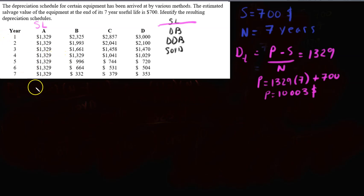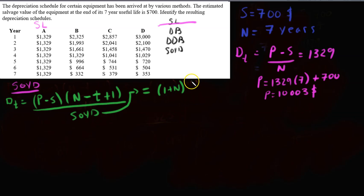From the previous video, the formula to calculate SOYD, the depreciation at any year for the SOYD method is D equals P minus S multiplied by N minus t plus 1 over the SOYD sum of years depreciation, which is found with another formula. SOYD equals 1 plus N times N over 2. And in this case equals 1 plus 7 times 3.5, 7 over 2, and that gives us 28.